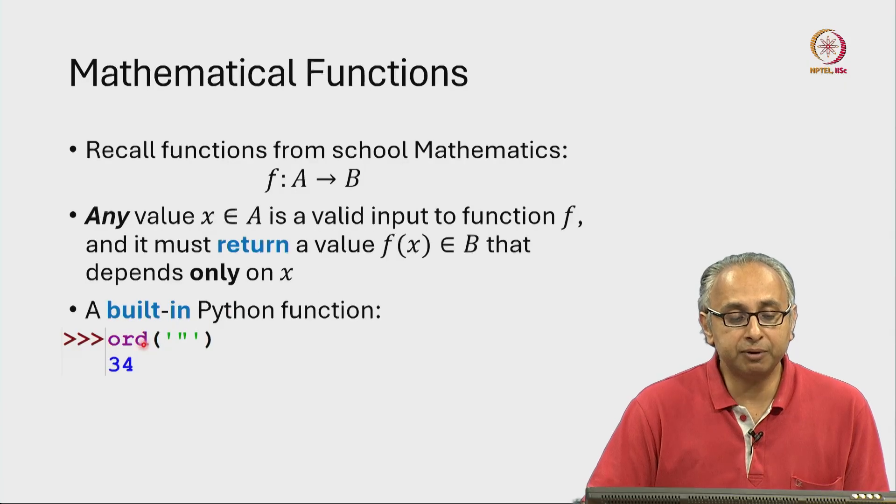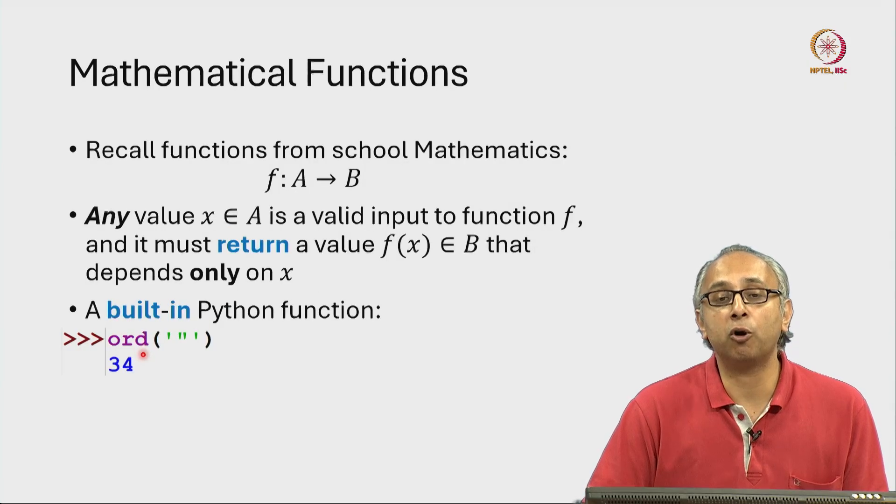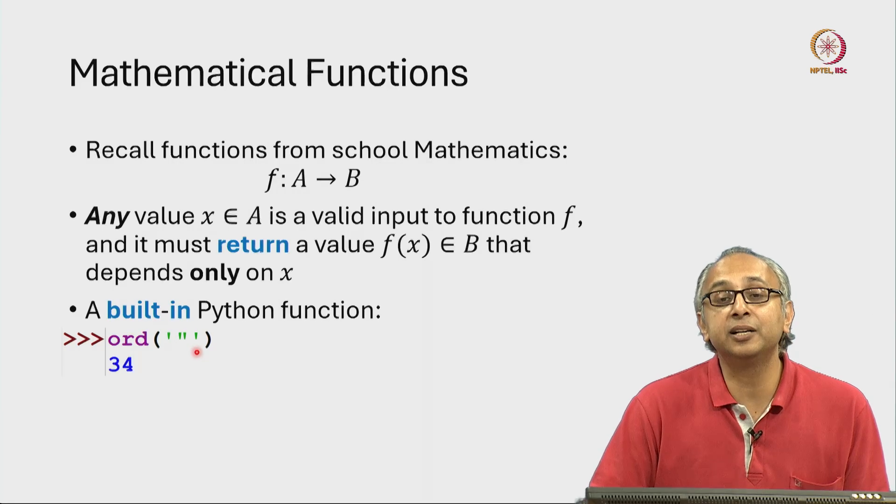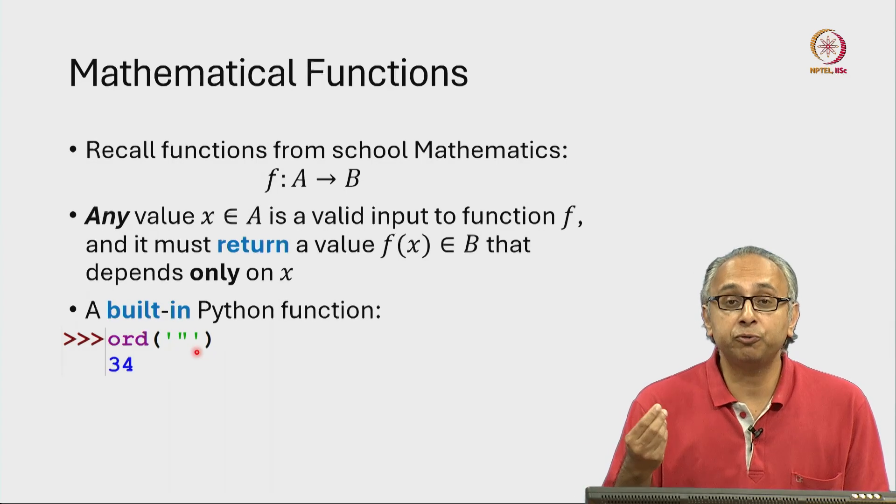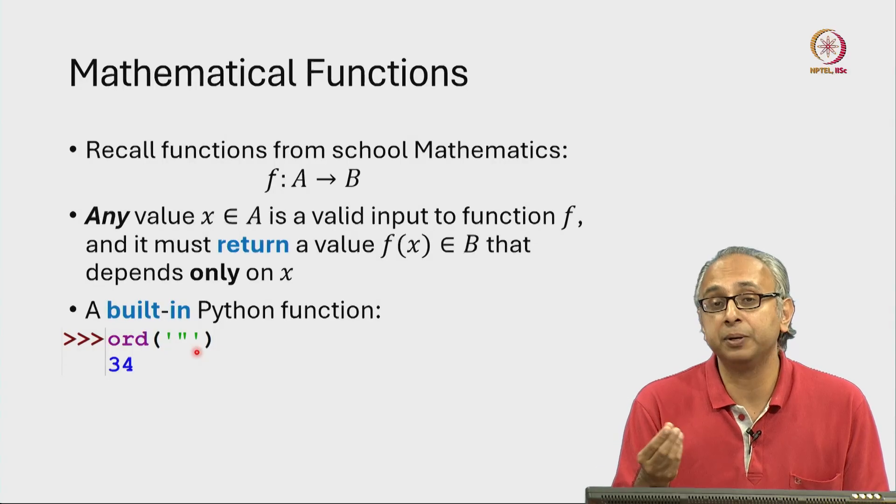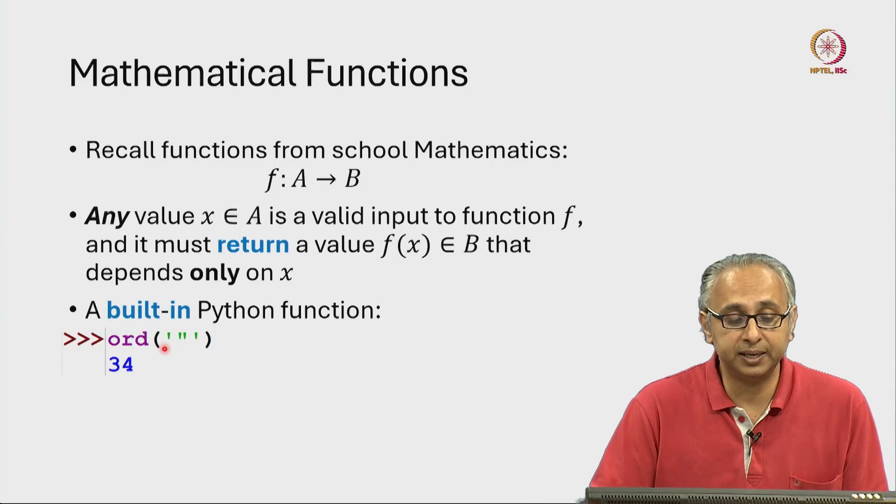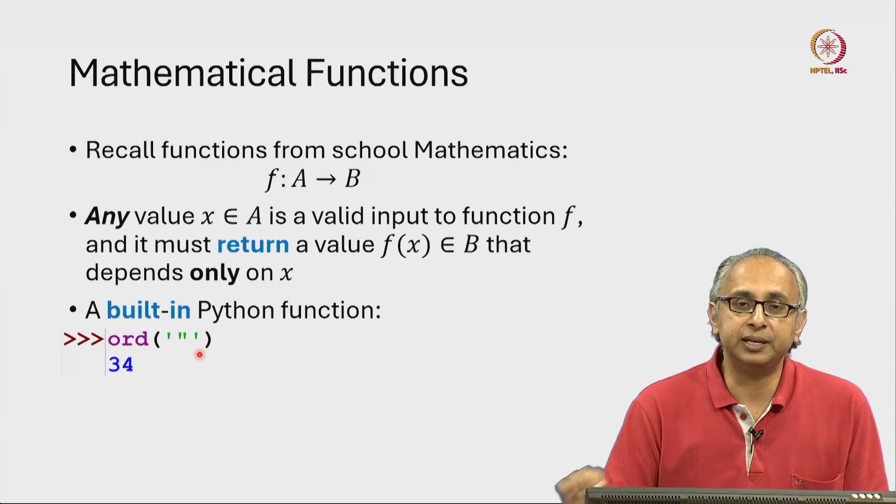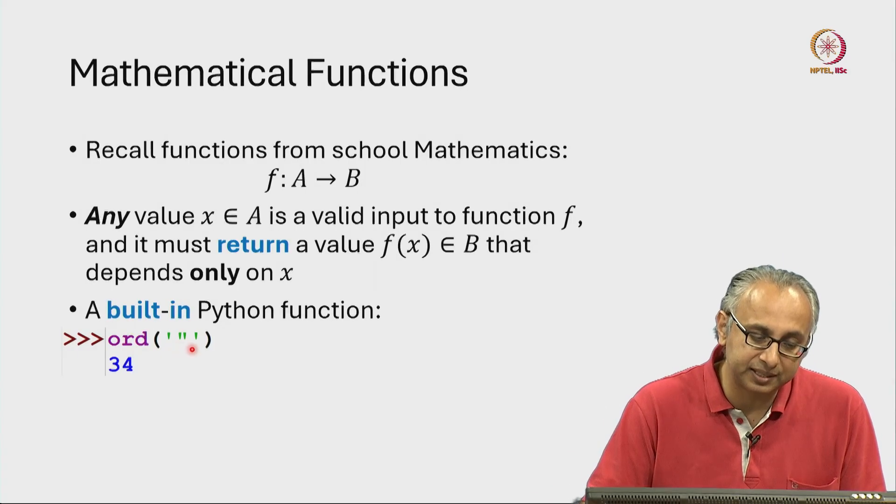So here in the REPL I am calling the built-in ord function. The x that I am giving it is within single quotes. So the ord function is expecting an input that is of type string, which is why I am passing it a string in single quotes. Now what is the letter inside the string? Well that is the double quote.